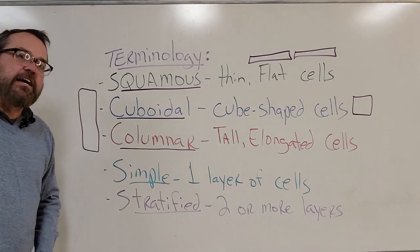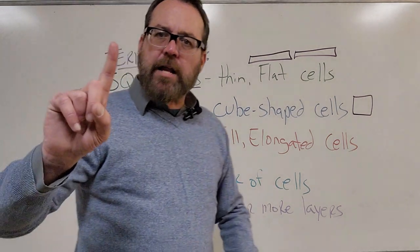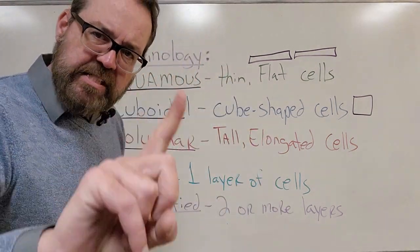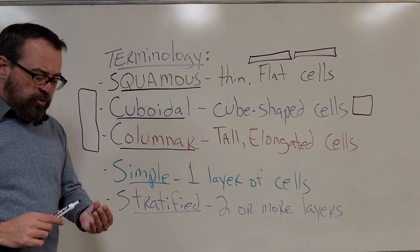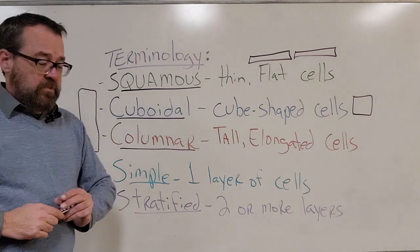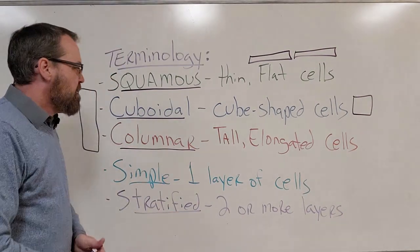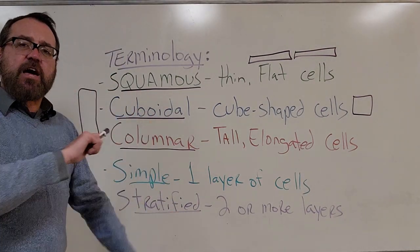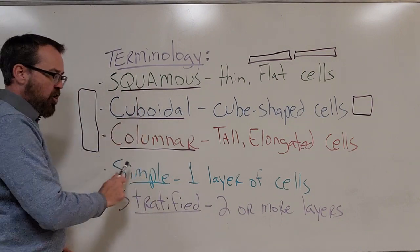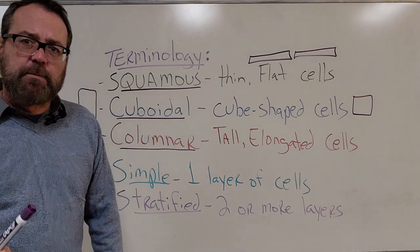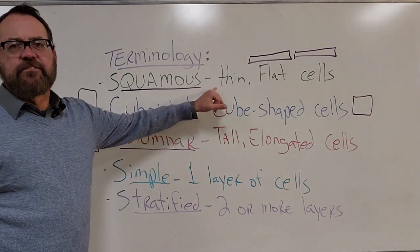Then we look at the layers of cells. If we use the word 'simple,' that just means one — one layer of cells is simple. Two or more layers we call stratified. So simple means one; anything other than one is stratified. We start interchanging these words together, and that's how it makes sense. So the first one is simple squamous, which tells me just from its name alone that this is going to be one layer of thin, flat cells.